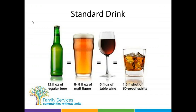We're going to look at the standards for healthy drinking, and these may be a little surprising. Some types of drinks contain more alcohol than others, so we have the concept of a standard drink. A standard drink is: 12 fluid ounces of regular beer, 8 to 9 fluid ounces of malt liquor, 5 fluid ounces of table wine, or a 1.5 fluid ounce shot of 80-proof spirits — all containing the same amount of alcohol.